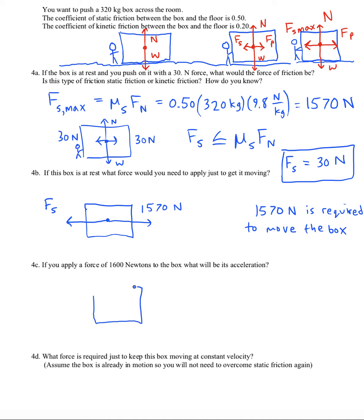When the box starts to move, the type of friction changes from static friction to a friction of motion, kinetic friction. But the kinetic friction is never as large as the static friction. So whereas the static friction could be 1570 newtons, the kinetic friction won't be that high. Let's figure out what the kinetic friction will be for this box.